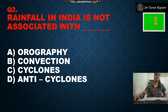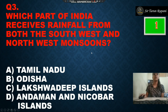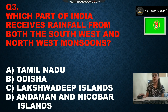Our third question: which part of India receives rainfall from both the south-west and north-east monsoons? Option A is Tamil Nadu, option B is Odisha, option C is Lakshadweep and deep islands, and option D is Andaman and Nicobar Island. The correct answer is Andaman and Nicobar Island.